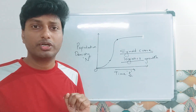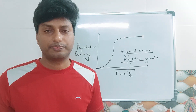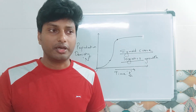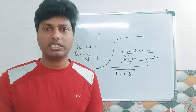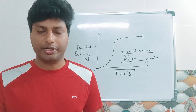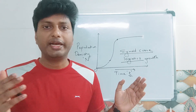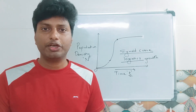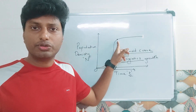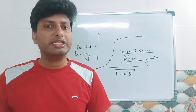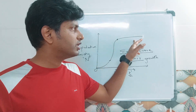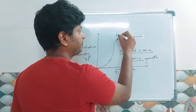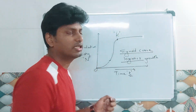The reason population stabilizes is due to limiting factors. In nature, resources are limited. If the population keeps increasing, it will grow only up to a certain point — beyond that there will be scarcity of resources, preventing further growth. This applies to every organism: bacteria, plants, and animals. Growth depends on resource availability.